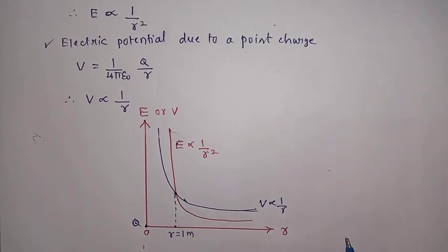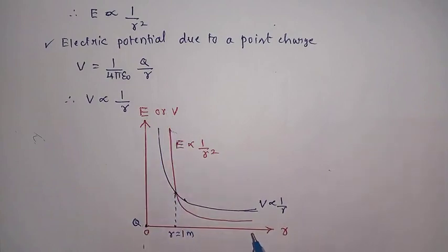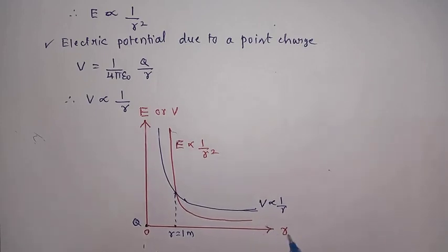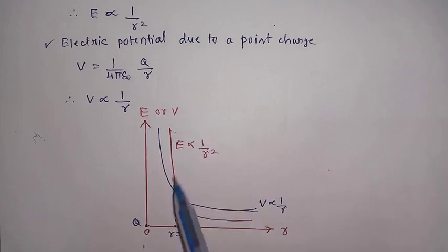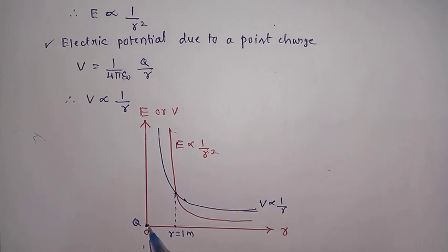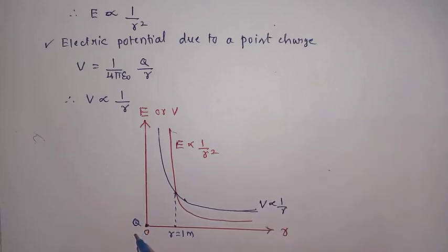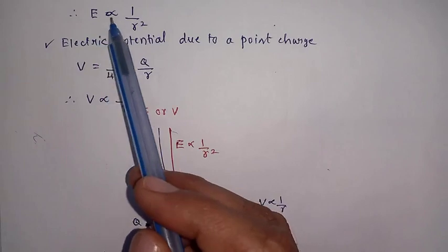Now if you draw the graph of electric field and electric potential with respect to distance, let us draw the x-axis as distance and the y-axis as electric field or potential. Assume the charge is placed at the origin. As the distance increases from the charge, we observe how electric field and electric potential vary.